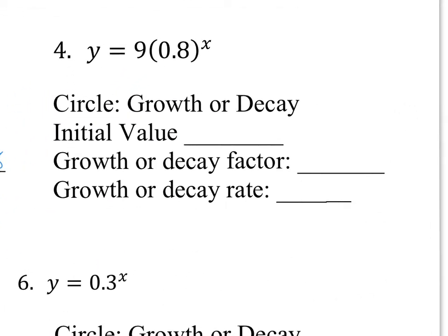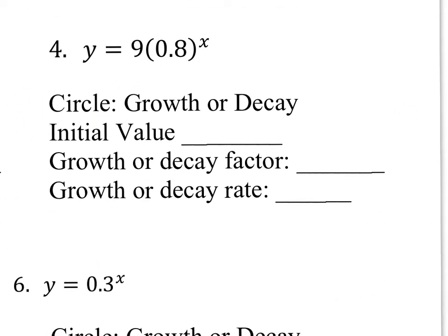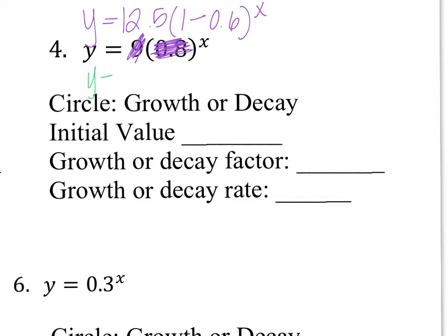Let's try number 4. Looking at number 4, it looks oddly similar to number 3. I want you to change 9 to 12.5, and change 0.8 to 1 minus 0.6 to the x power. Now looking at this, I can't instantly tell if this is growth or decay, so first I want to simplify.